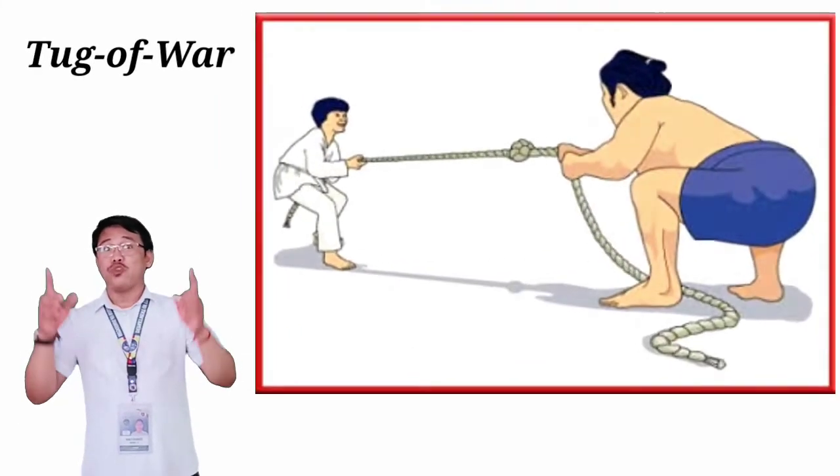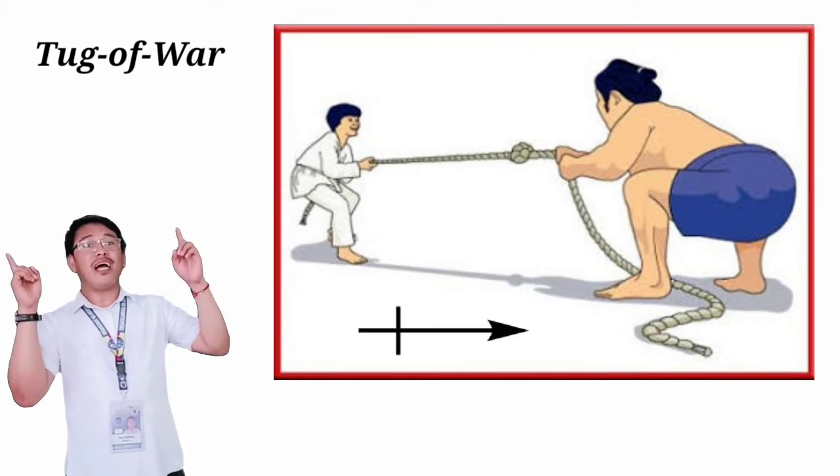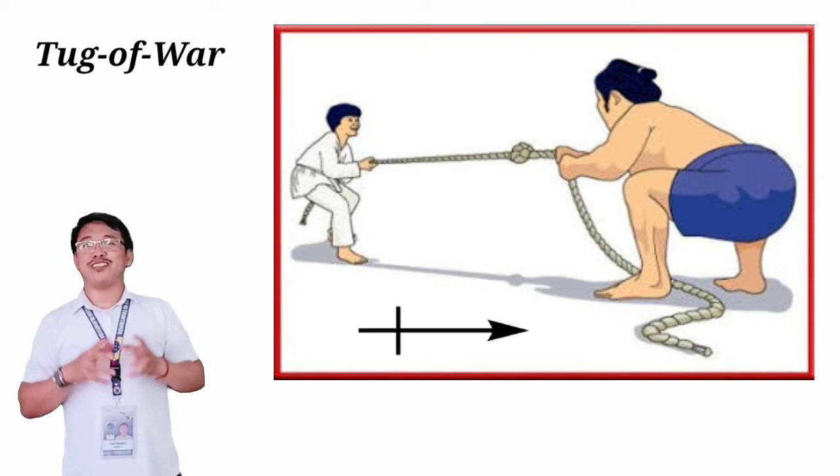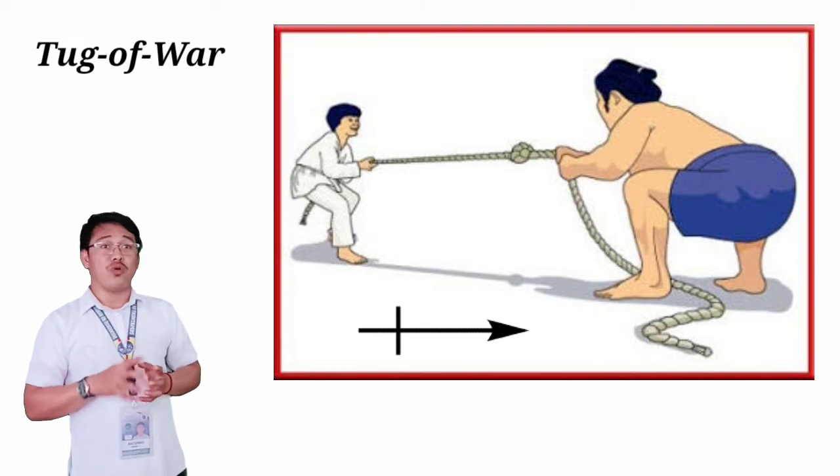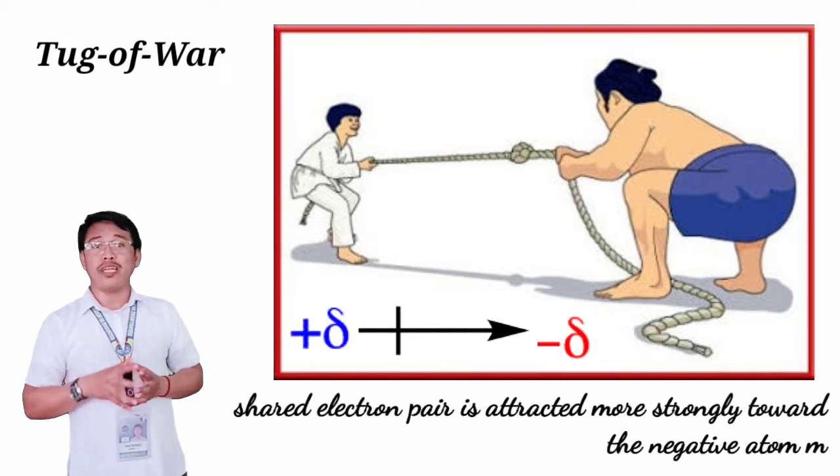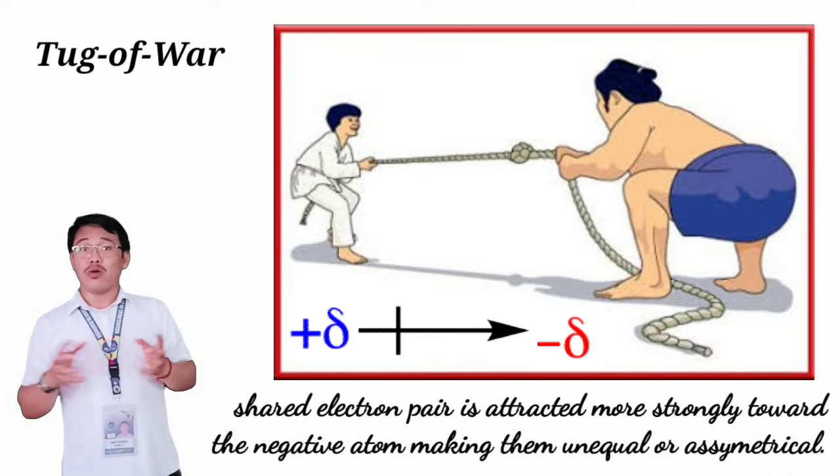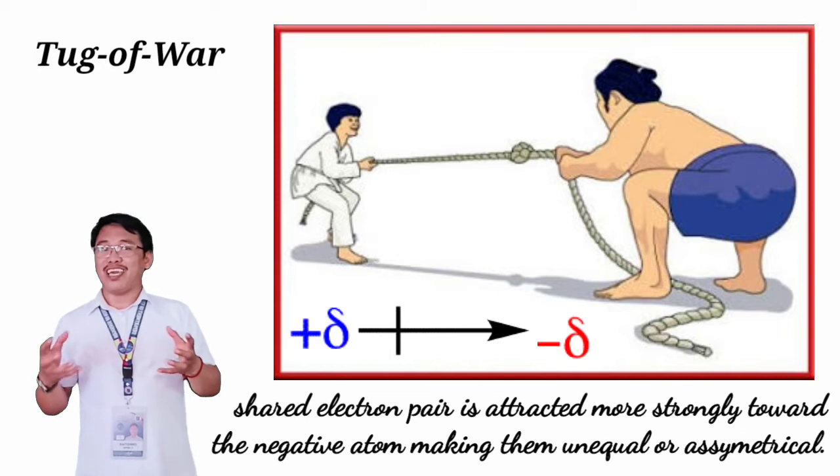The sharing of electrons by two atoms may be likened to a tug of war between two men. The stronger man drags the other across a central line. Between atoms, the shared electron pair is attracted more strongly toward the negative atom, making them unequal or asymmetrical, creating a polar bond.